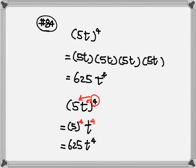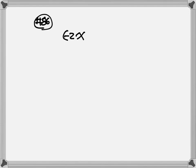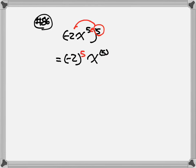Now let's look at number 86. Here we have negative 2x to the 5th power with a 5 outside. We take the outside exponent and multiply to everybody inside. So this will be negative 2 to the 5th power, then for the x exponent: 5 times 5. So the answer is equal to negative 32, then x to the 25.